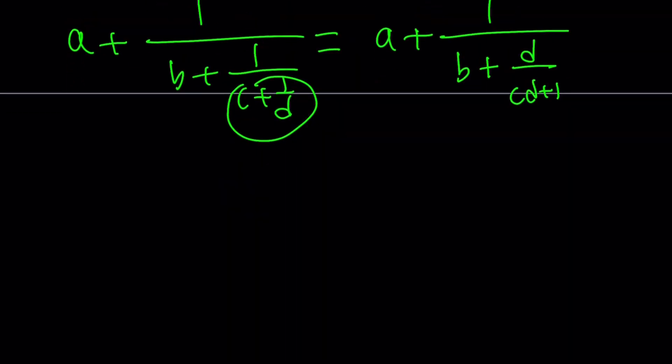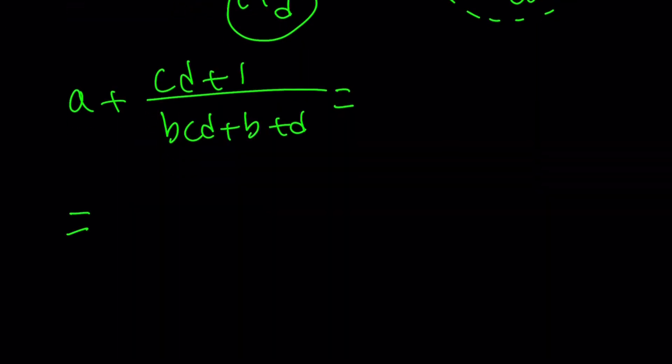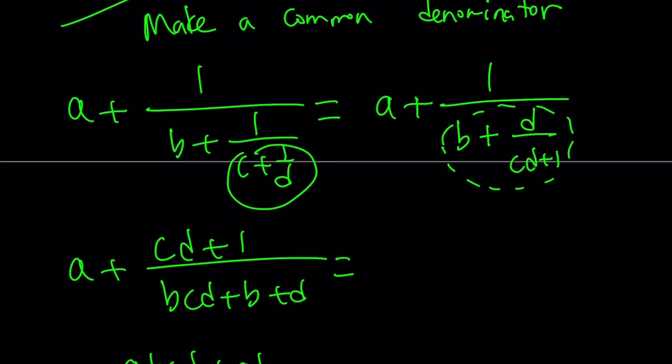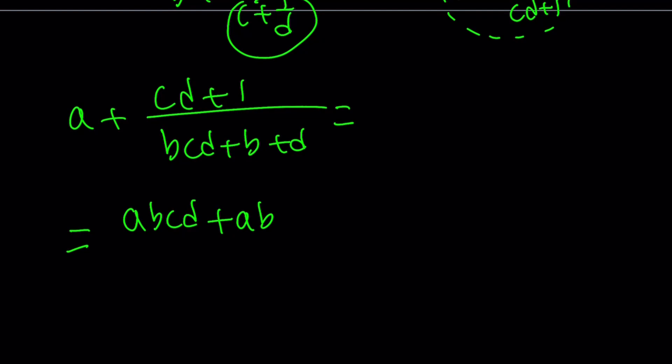If you make a common denominator and flip it, you get A plus 1 over B plus D over CD plus 1. Then if you make a common denominator here again and simplify by flipping, you get A plus CD plus 1 over BCD plus B plus D, because 1 over gives you the reciprocal. Do it one more time. We have A plus this, so I make a common denominator. There's no more flipping, just making a common denominator here.